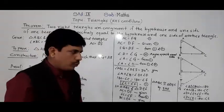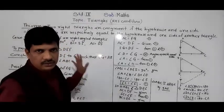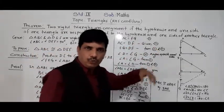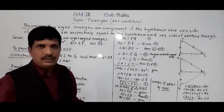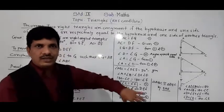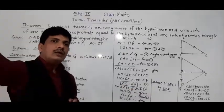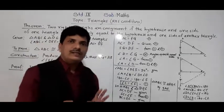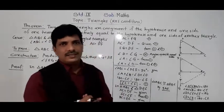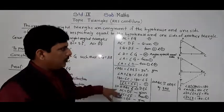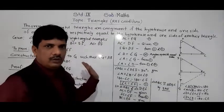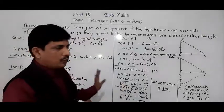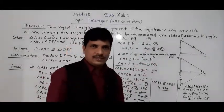So the conclusion at the end of this theorem: if two right angle triangles are given and the hypotenuse and one side of one triangle are equal to the hypotenuse and one side of another right angle triangle, then both triangles are congruent under the RHS criterion.